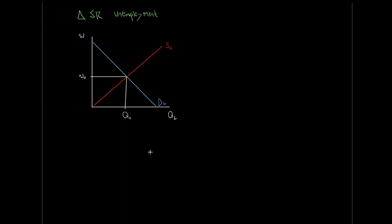Now let's suppose that all of a sudden we have a drop in real GDP — we have some economic crisis that has caused a decrease in our output. Keep in mind, that's what real GDP is: it's a measurement of our real output, how much stuff we're able to produce. And on the other side, output, expenditure, income — altogether the amount of output is dropping.